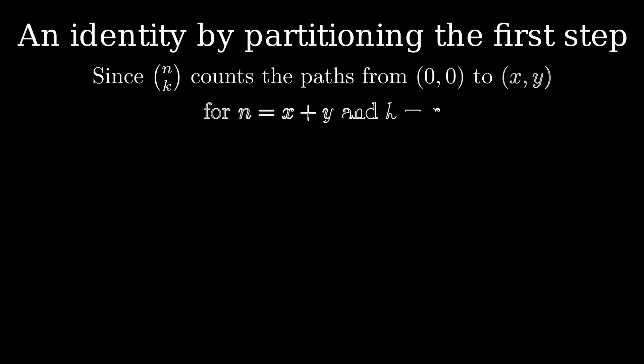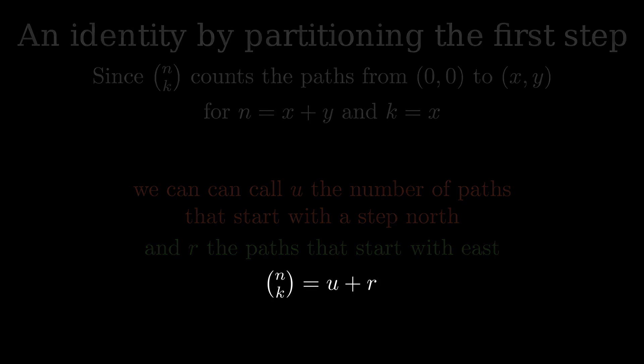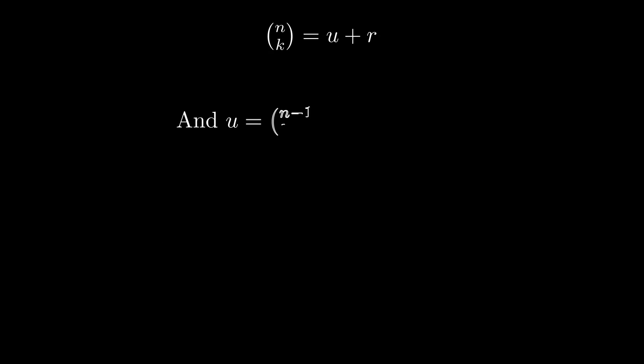One demonstration of the value of lattice paths is that we can make an obvious observation using them. In the set of all paths from the origin to X comma Y, each path must start by going right or up. That N equals X plus Y and K equals Y.